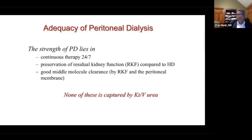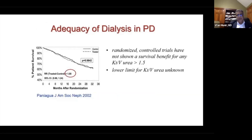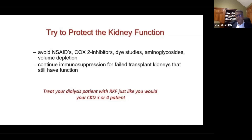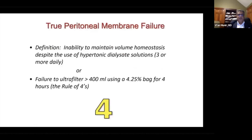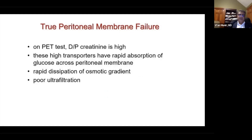Peritoneal dialysis also clears middle molecules more effectively than hemodialysis. In the control arm, average KT/V was around 1.3 to 1.4. It is a good idea to treat end-stage kidney disease patients on peritoneal dialysis as we would CKD stage 3 or 4 patients, preserving kidney function. Ultrafiltration failure of the peritoneal membrane is one reason for insufficient fluid removal, defined as needing more than 4.25% exchanges daily to maintain euvolemia.